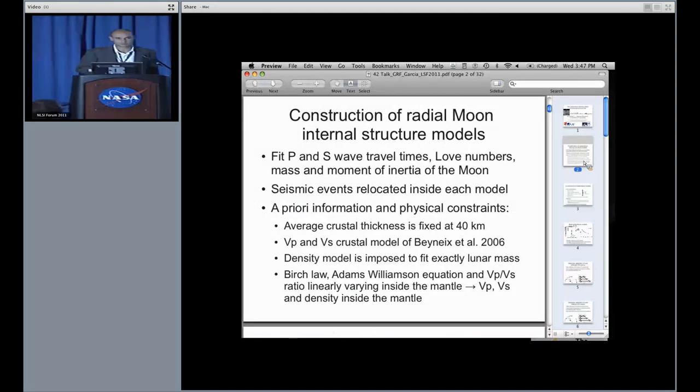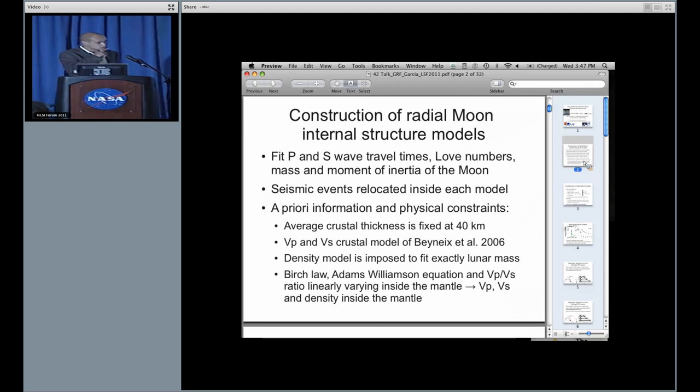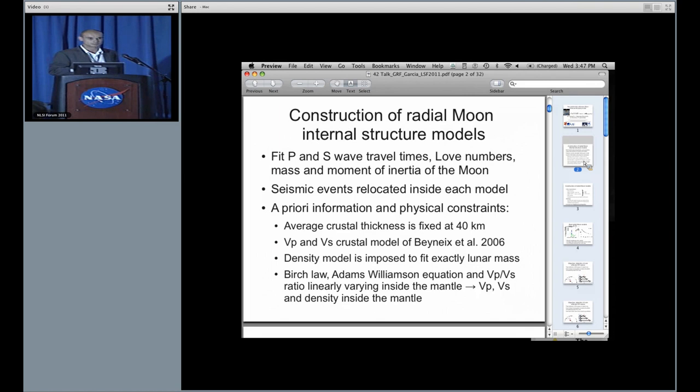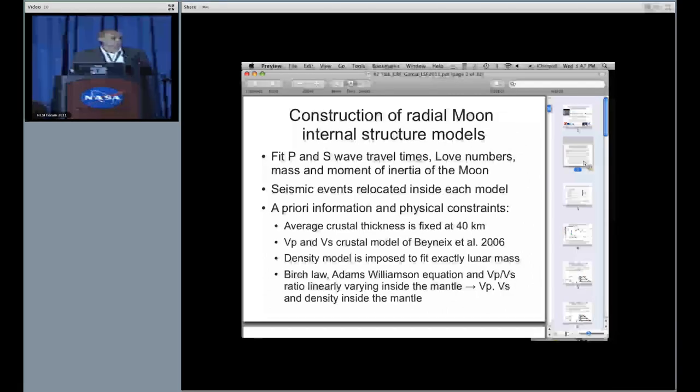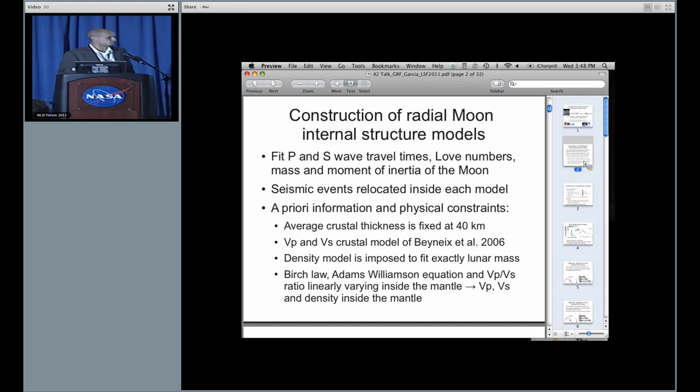If you would like to construct a radial model, you would like first it to fit P and S wave travel times, but also geolithic parameters such as love numbers, mass and moment of inertia of the moon. You would like also the seismic events to be relocated inside each model, and you would like to put as much as possible a priori information and physical constraints. We've used an average crystal thickness of 40 kilometers, the crystal model by Beynex et al., and we impose the density model to fit exactly the anomalous. Then comes physical constraints: you can use Birch's law relating VP velocity to density, but also Adams Williamson equation in the mantle under the adiabaticity constraint, and we made a simple parameterization of P over S velocity ratio.